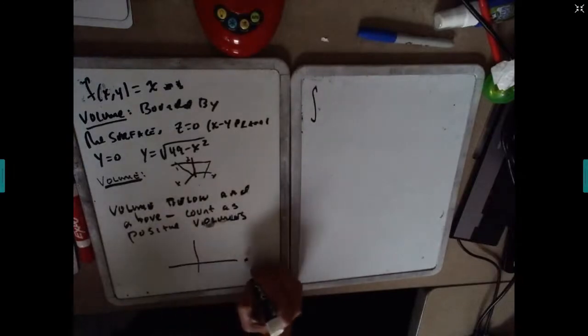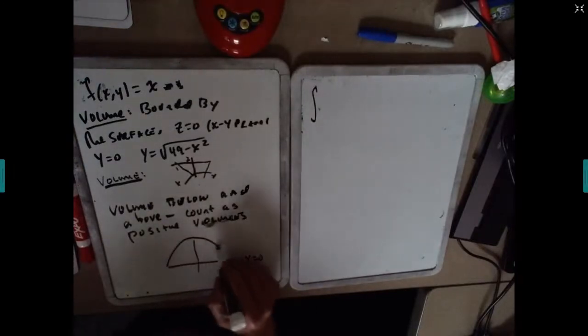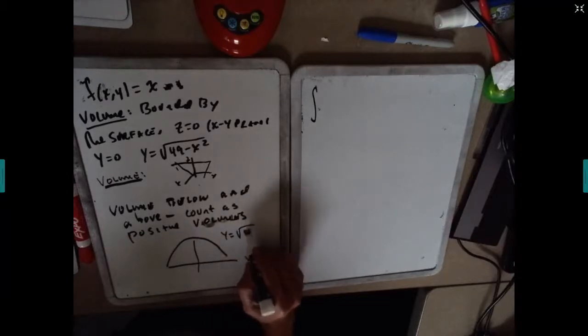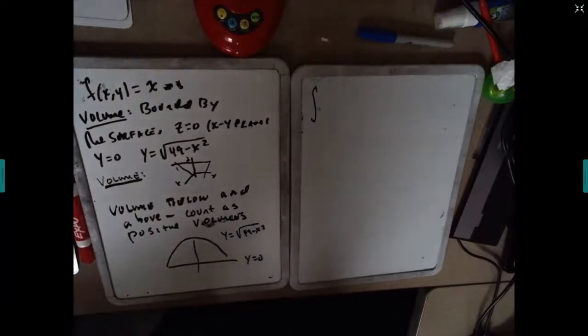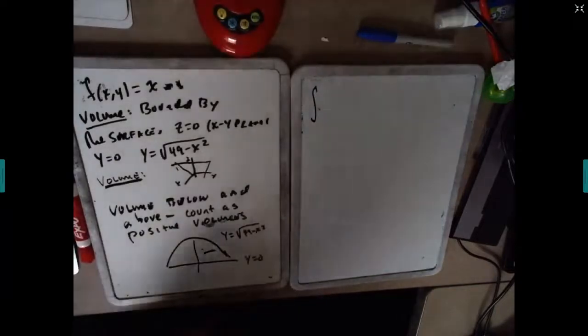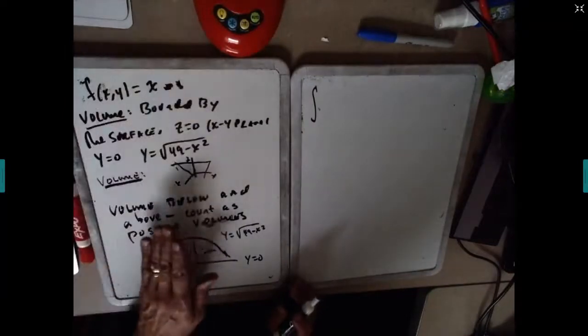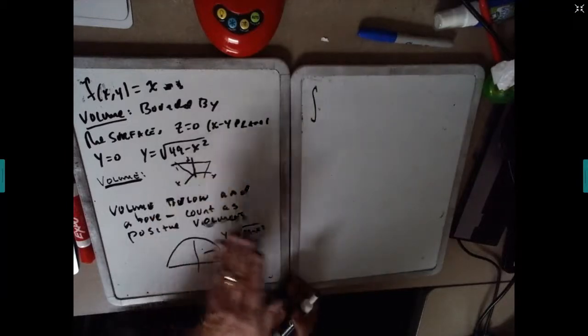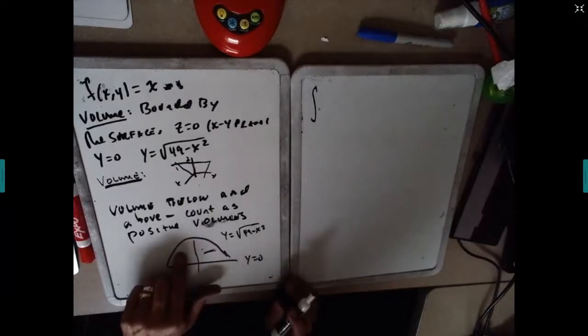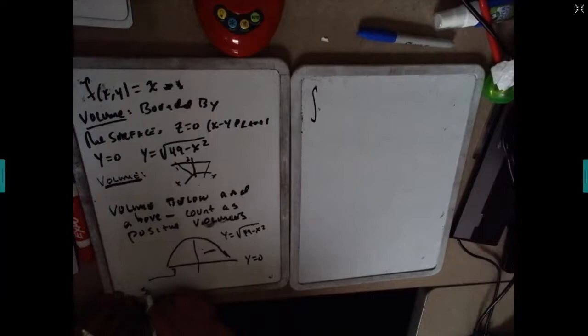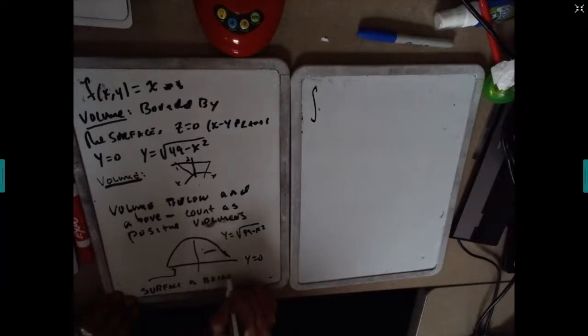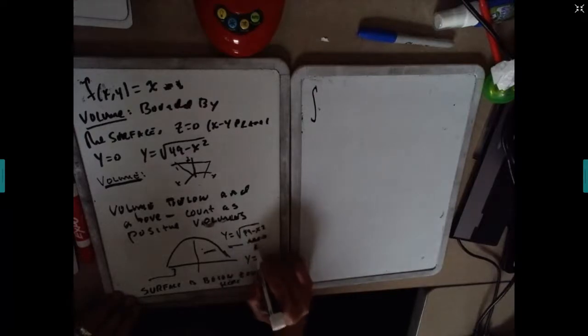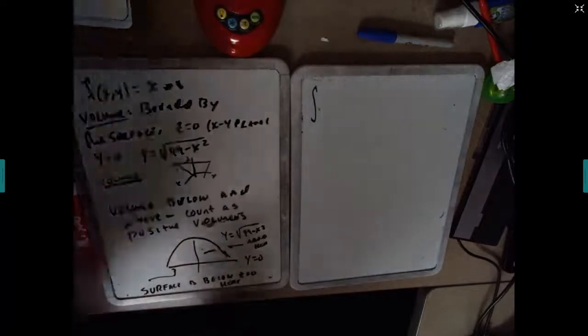So what we're really doing is we want to integrate. Let's take a look at the y. Y equals zero is here, y equals square root of 49 minus x squared is here. This is - and our plane f(x,y) equals x is cutting like this. So the surface will be below z equals zero here and it's above here, because remember this thing is cutting like that.